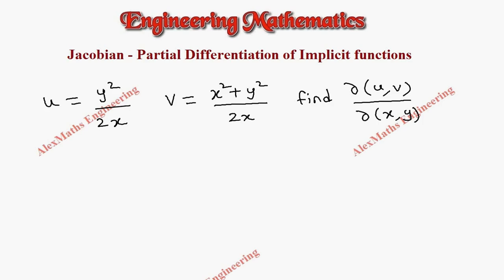Hi students, this is Alex here. In this video we are going to solve a problem based on partial differentiation of an implicit function using the Jacobian, where u is y² / 2x and v is (x² + y²) / 2x.